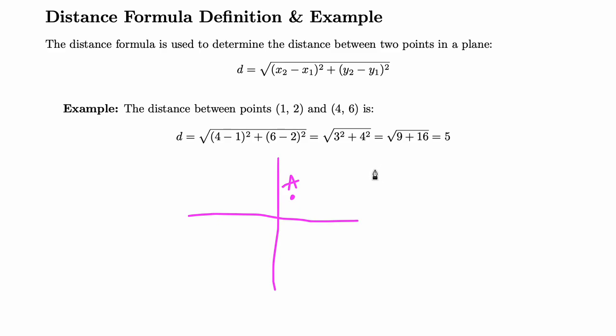And 4 comma 6, let's call this b. So this is b, and that's 4 comma 6. Okay, so now, there we go.